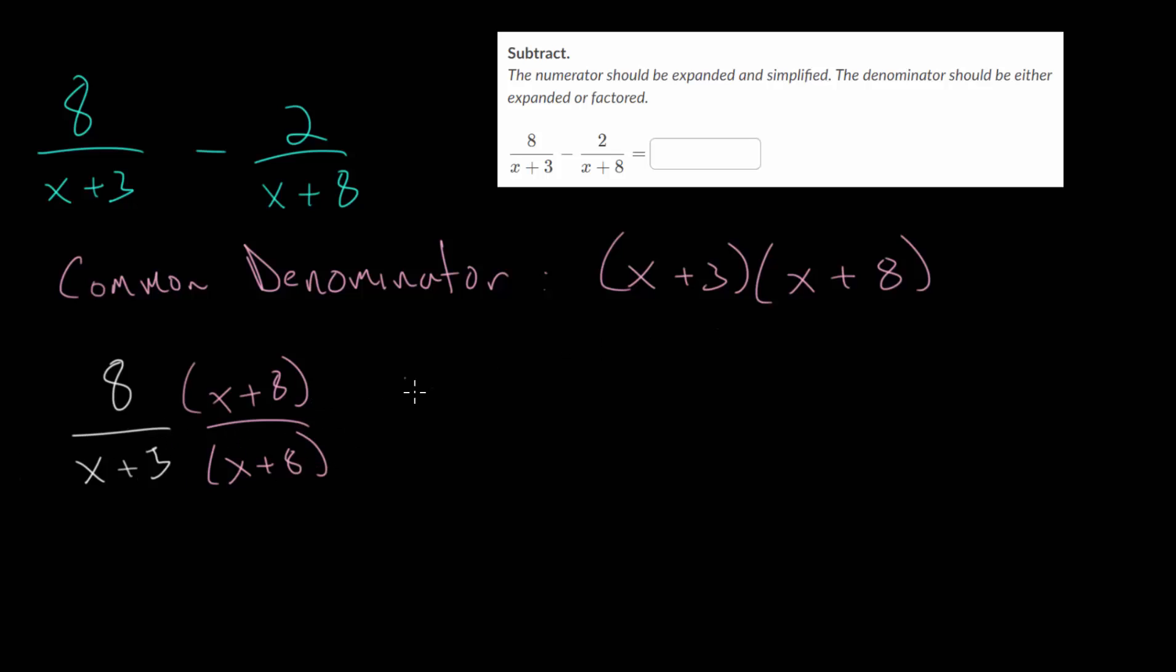And that way, we will get our desired common denominator. And likewise, we'll take our second expression, and since this denominator already has x plus 8, we're going to need to multiply the top and the bottom by the other factor here in our denominator, this x plus 3. And by doing this, we'll end up with our desired common denominator. So both of these will have x plus 3 times x plus 8 as the denominator of their expressions.